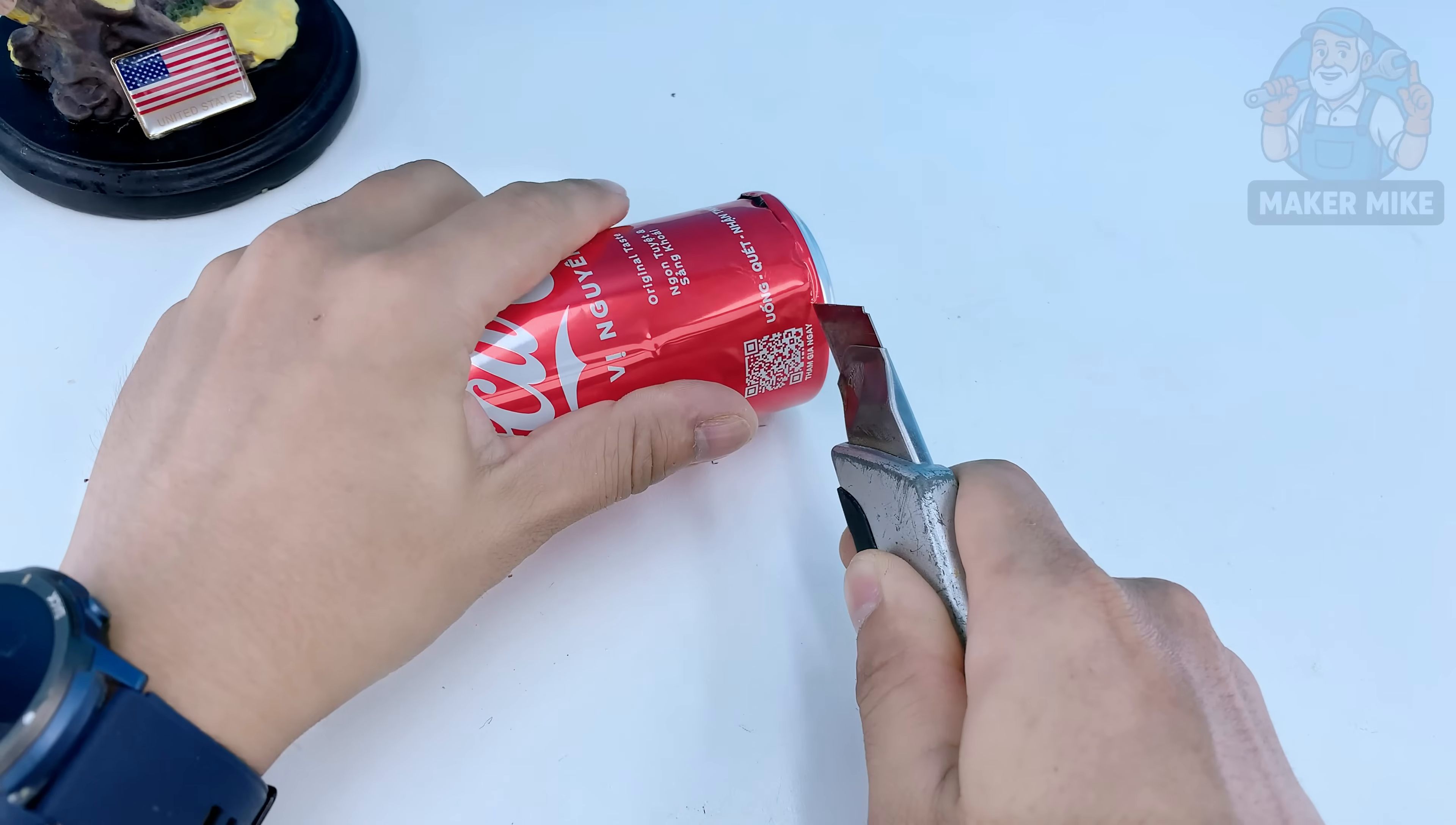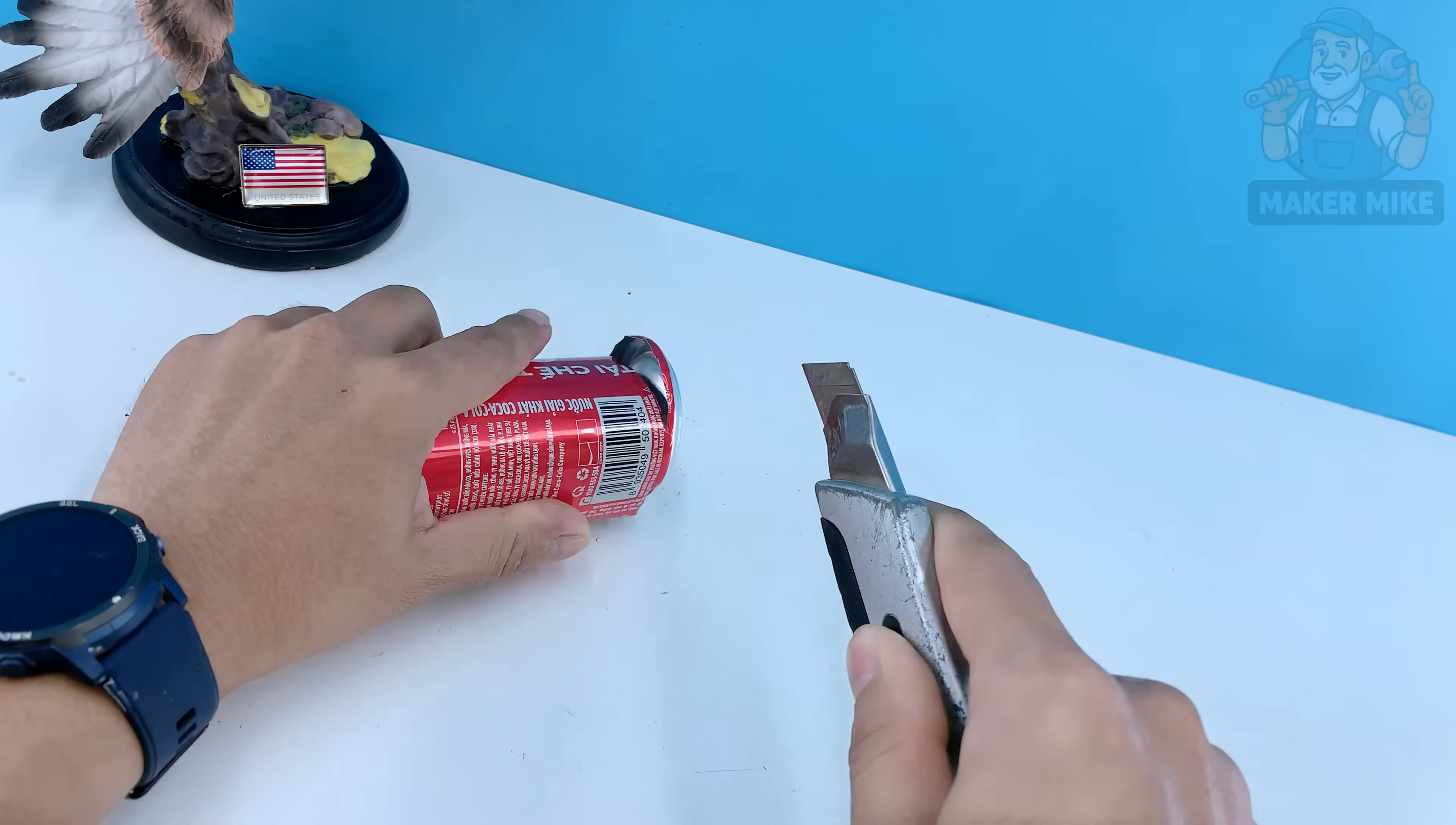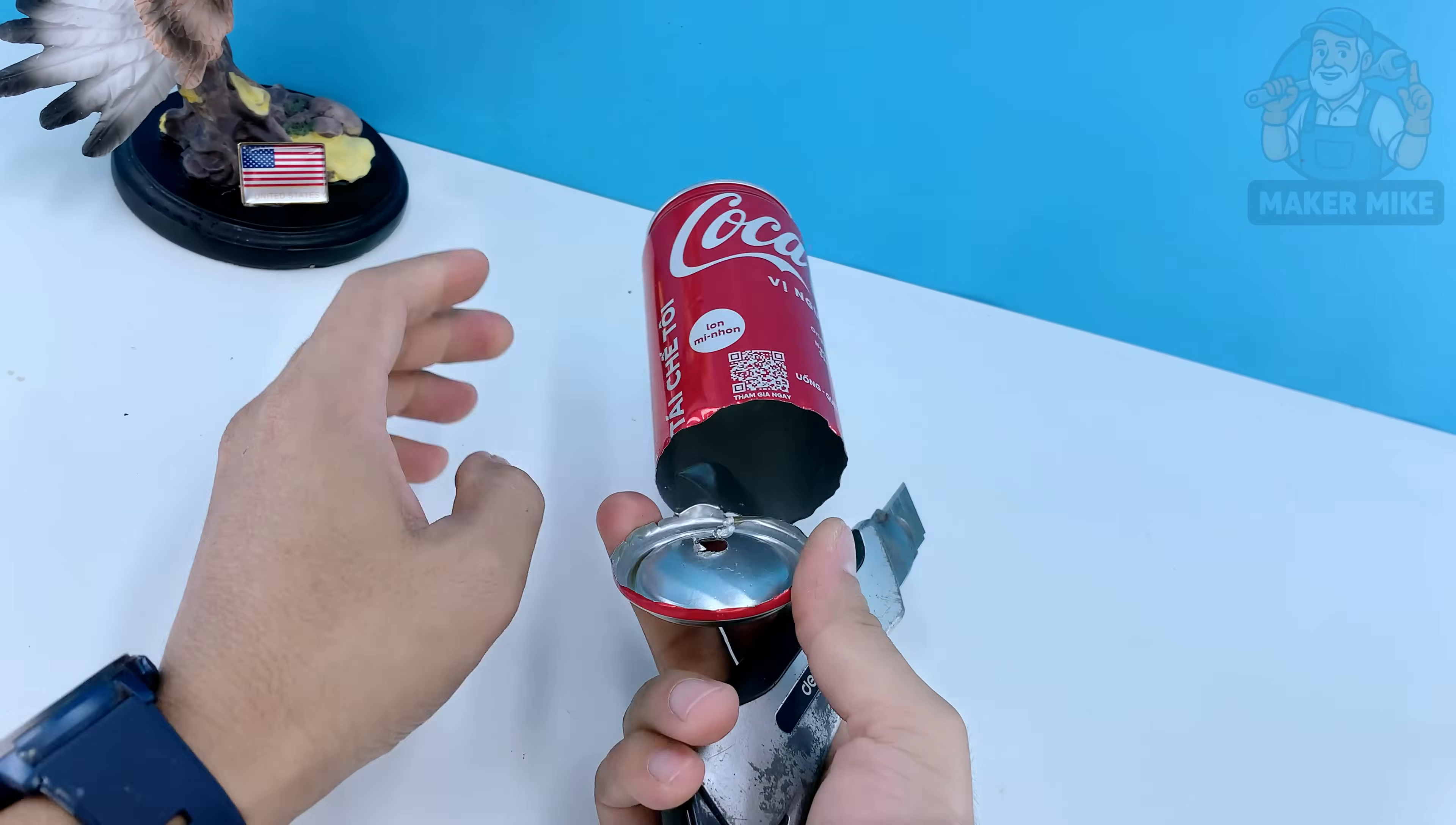A little tip I've learned over the years, instead of forcing the blade, twist the can slowly while keeping the knife steady. It gives you a smoother cut and keeps the edge from bending.